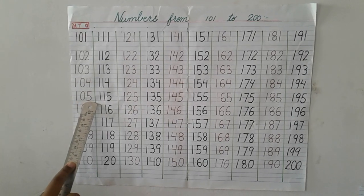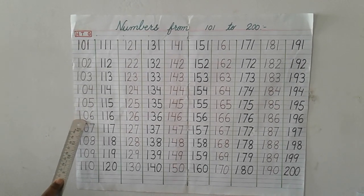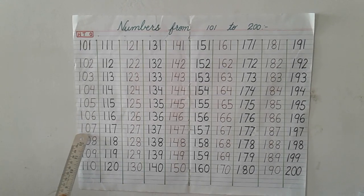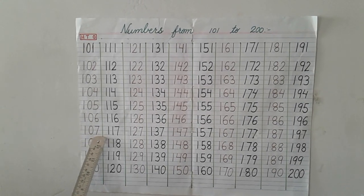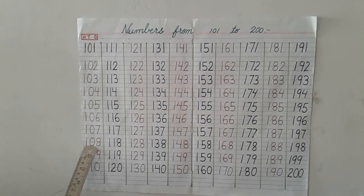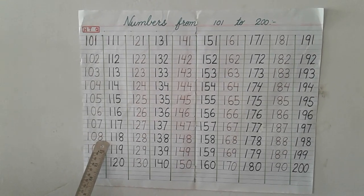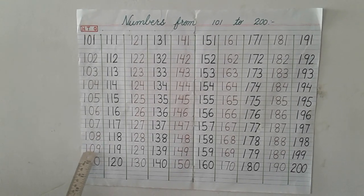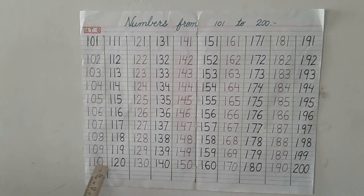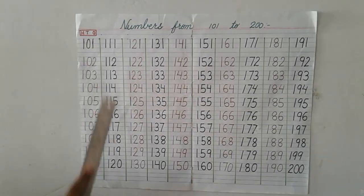1, 0, 5. 1, 0, 6. 1, 0, 7. 1, 0, 8. 1, 0, 9. 1, 0, 10. So we will write for 111: 1, 1, 1.